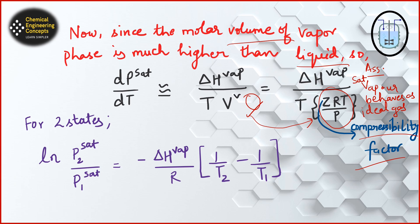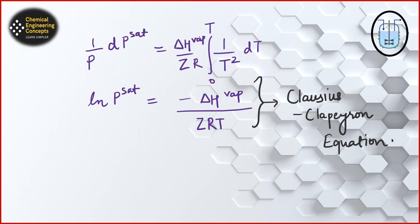Using this ideal gas assumption for any two states with different pressures and temperatures, we can derive an Arrhenius-type equation that can be directly used in numericals. If we integrate the simplified equation, we arrive at the Clausius-Clapeyron equation. This equation tells us how the saturation pressure changes with a change in temperature.